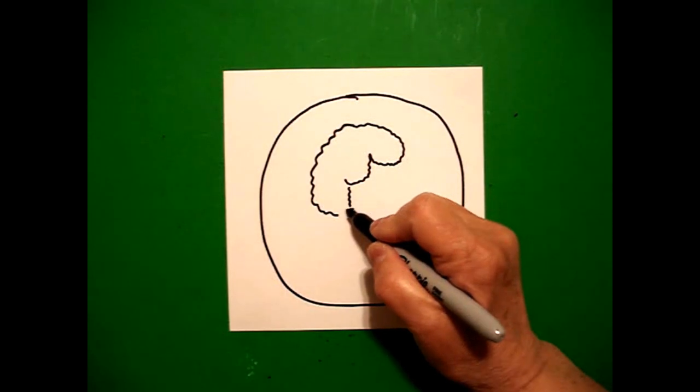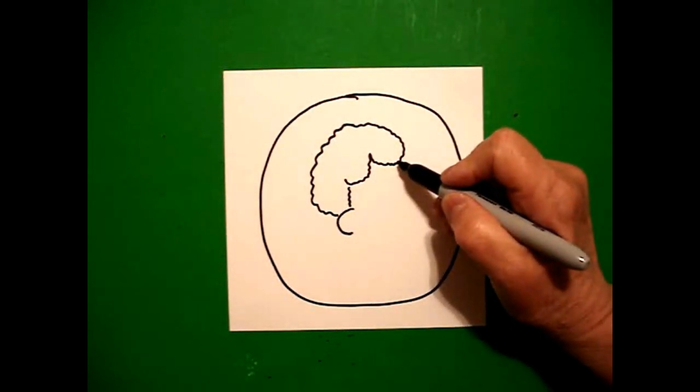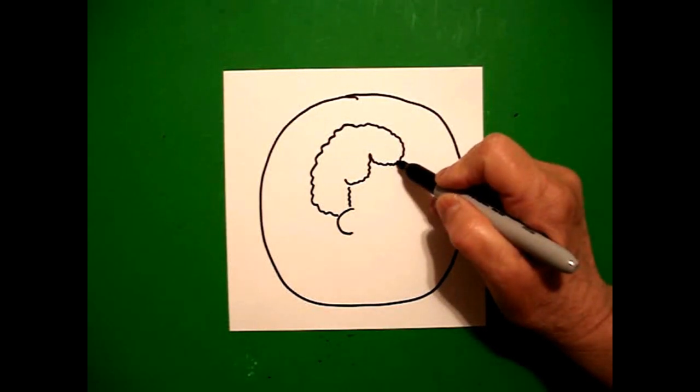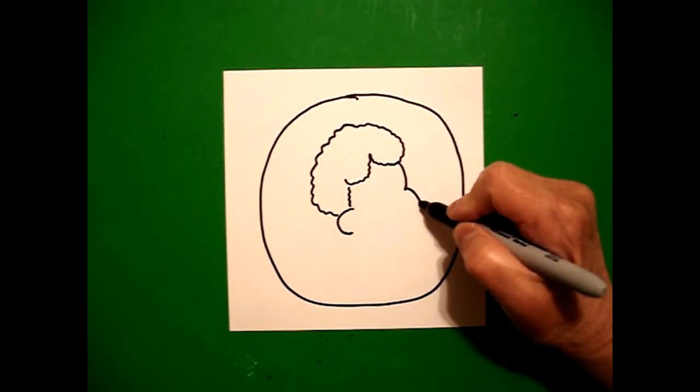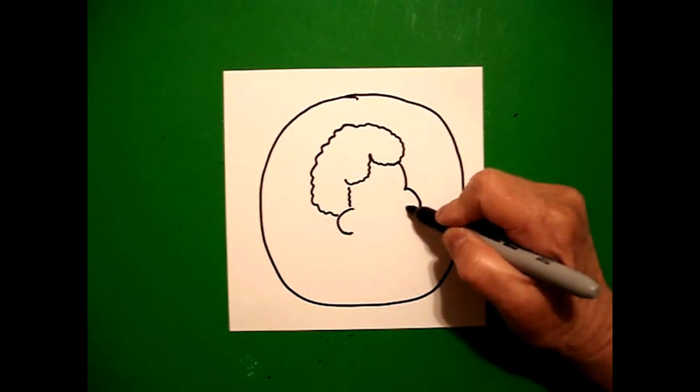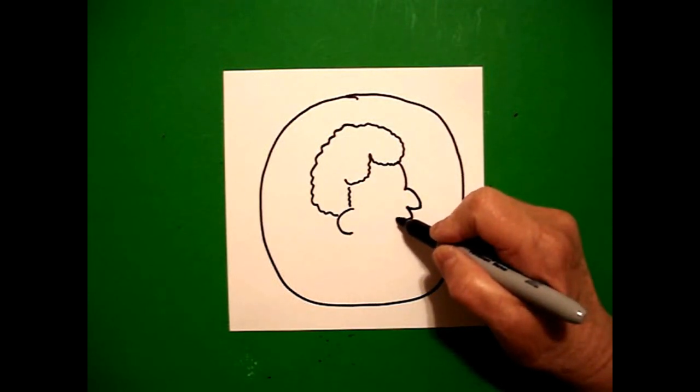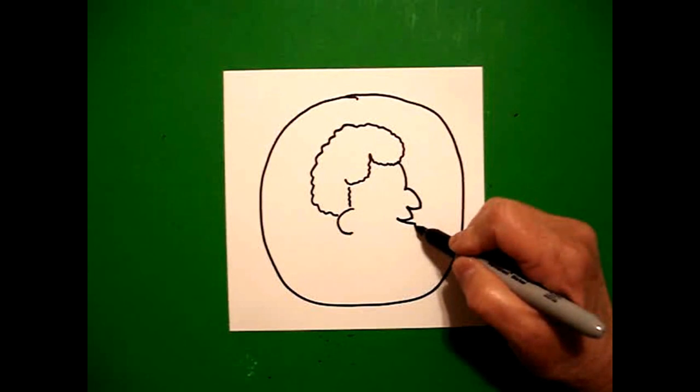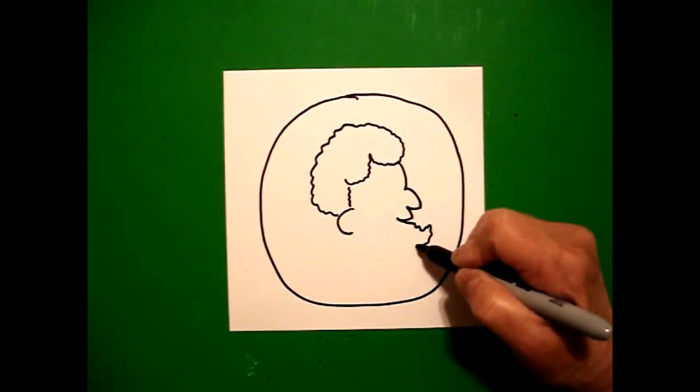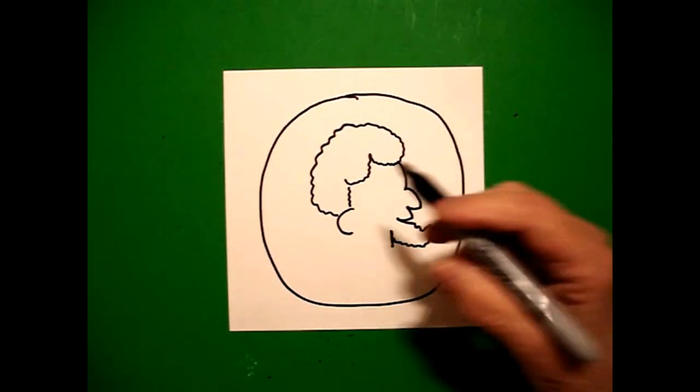And right about here I draw a curved line. I come back to the top on the right hand side. I draw a curved line down, curved line out, in, curved line down, curve line up, come back down, and a wavy, wavy line up, wavy, wavy line over, down.